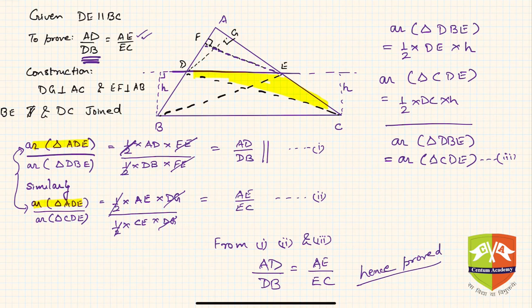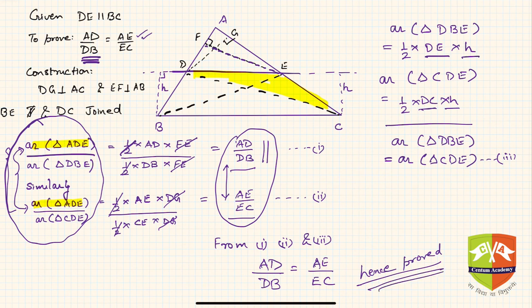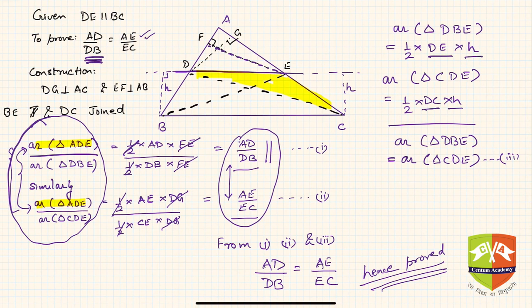Let us recap: we found the ratio of two pairs of triangles sharing the same numerator. We proved the denominators are equal because the base is the same and the height is the same for the two triangles between the parallel lines. So the LHS of both equations being equal forces the RHS to be equal too, giving us our result. This is the Basic Proportionality Theorem — also called Thales' theorem or the Intercept Theorem — which states that if a line is parallel to one side of a triangle, it divides the other two sides into equal ratios.